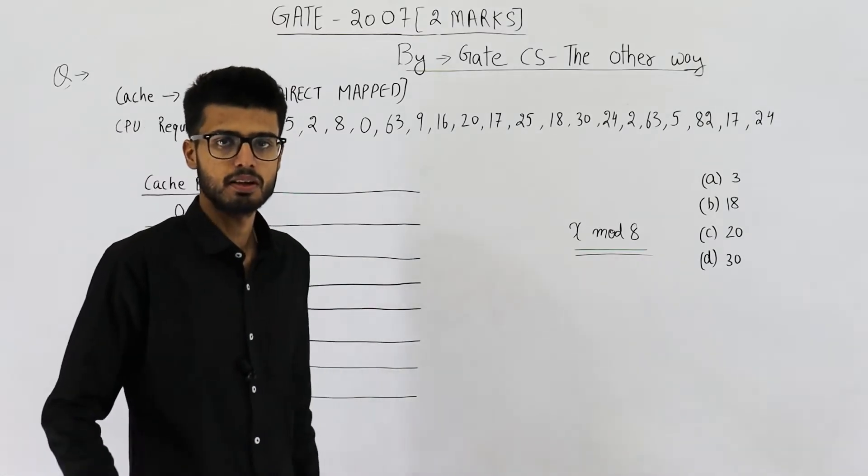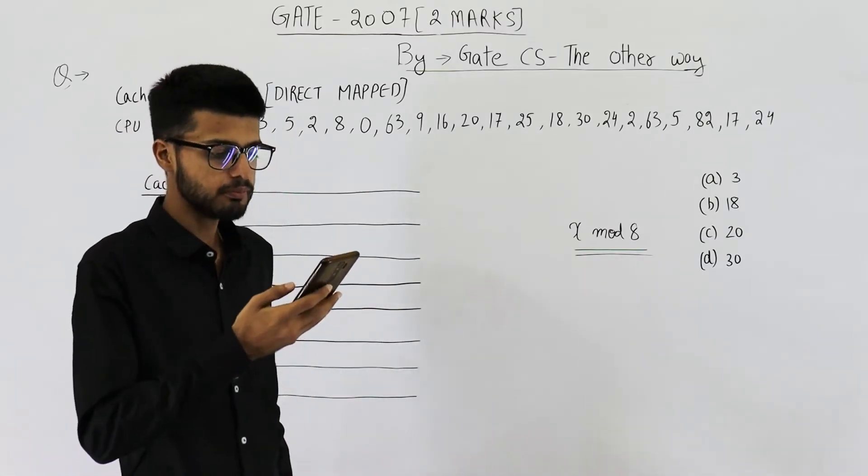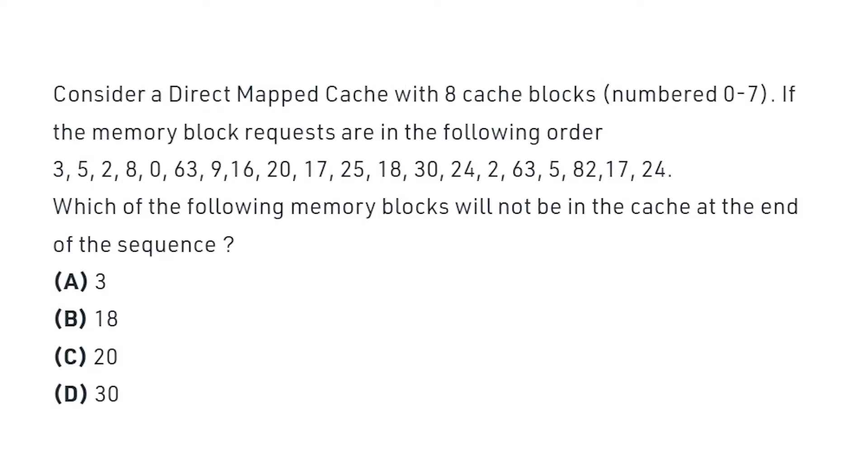So I'll read out the statement then we're going to solve it. Consider a direct mapped cache with 8 cache blocks numbered from 0 to 7. If memory block requests are in the following order, you can just see this sequence. They're asking which of the following memory blocks will not be in the cache at the end of the sequence.